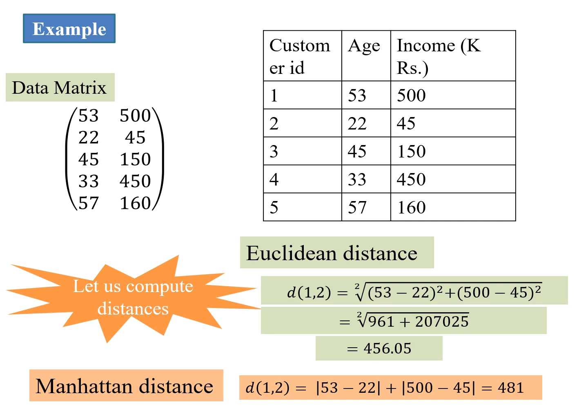Look at a very simple example comprising of two numeric attributes. We can see that these are also continuous because the attribute income or the value age can acquire any real number value. We have kept it to integers to make it simple. The corresponding data matrix is this: five rows and two features, a 5 cross 2 matrix. If we take the Euclidean distance between point 1 and 2, we take feature-wise difference: 53 minus 22 squared plus 500 minus 45 squared, adding it up and taking the square root, we get this value. We have also taken the Manhattan distance where we take the differences and add up their absolute value.